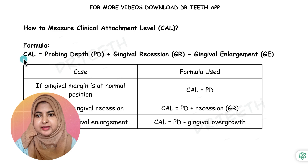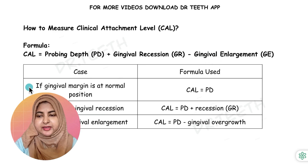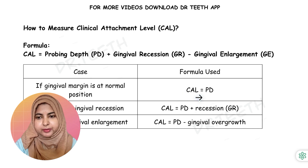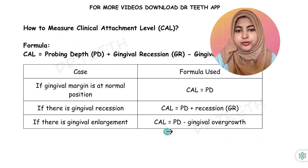The formula is: CAL equals the probing depth plus gingival recession if we have it, or if we have gingival enlargement we subtract that value. So if the gingival margin is at normal position, CAL will be equal to the probing depth — no gingival recession in that case. If there is gingival recession, you add the recession to the probing depth to get the CAL. If there is gingival enlargement, you subtract the gingival enlargement dimension from the PD to get your CAL.